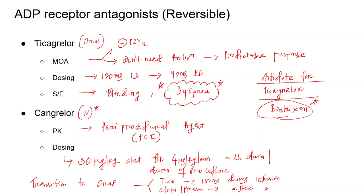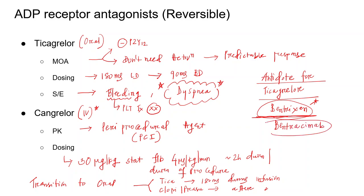One more important point: bleeding occurring during ticagrelor use cannot be managed with platelet transfusion — platelet transfusion is not useful in this situation. The antidote under development is bentracimab (corrected from earlier).